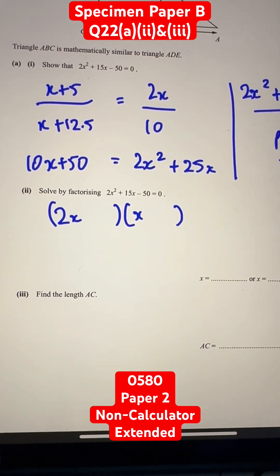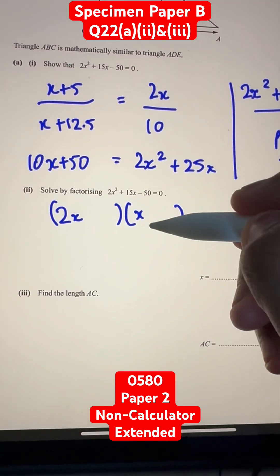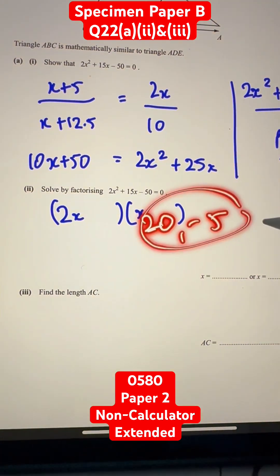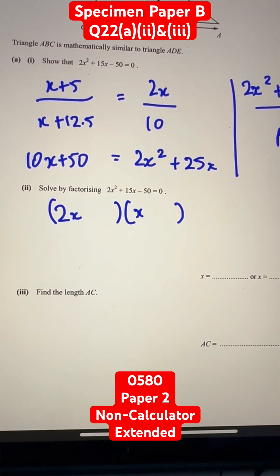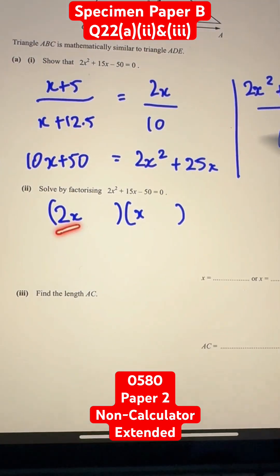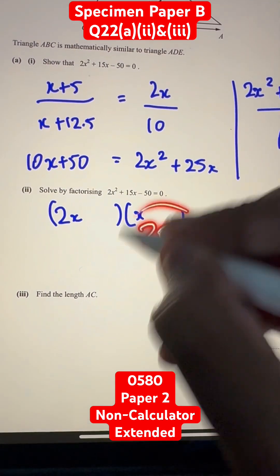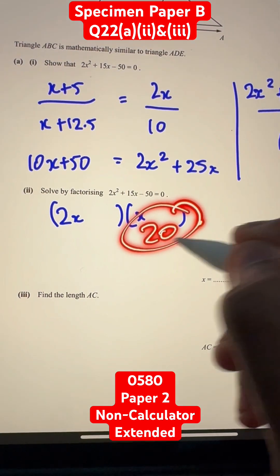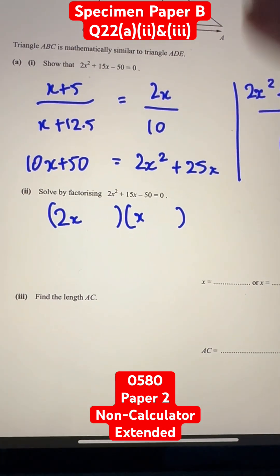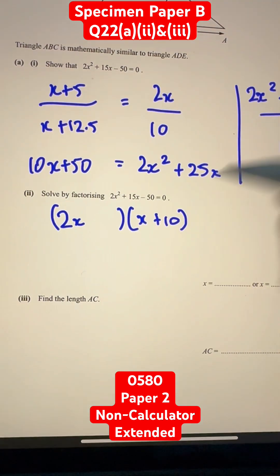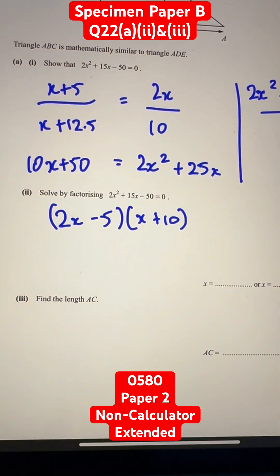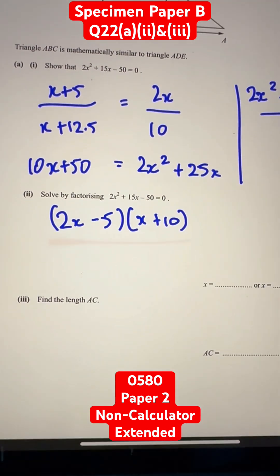Those two numbers are 20 and negative 5. Out of these, which one is divisible by 2? 20 is divisible by 2, so we do 20 divided by 2 and get 10. We write 10 in one bracket and negative 5 next to 2x in the other bracket, and therefore we have a factorization.